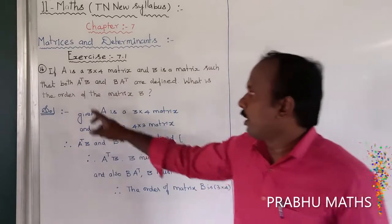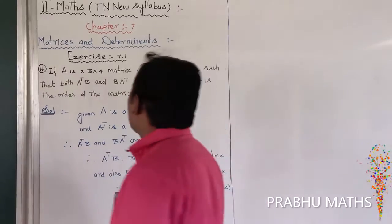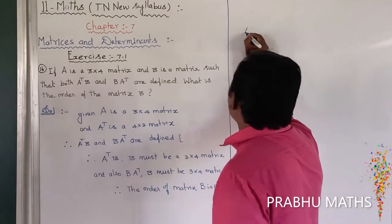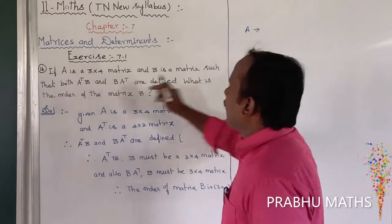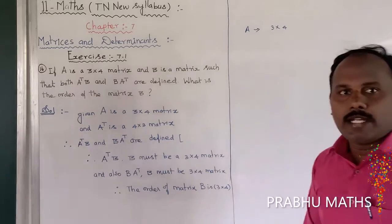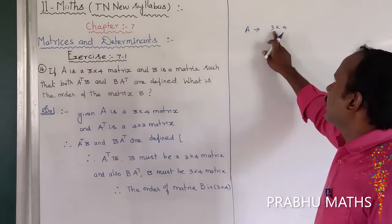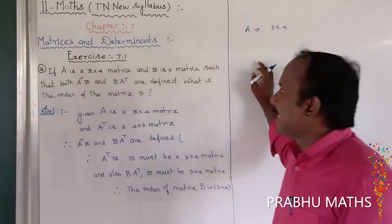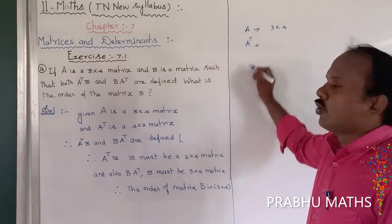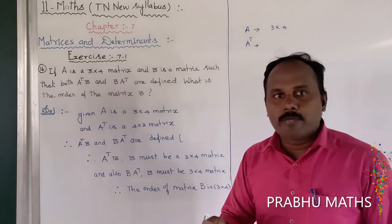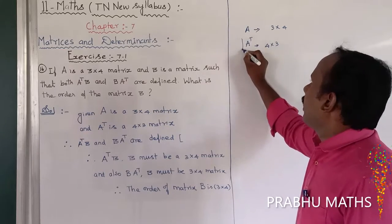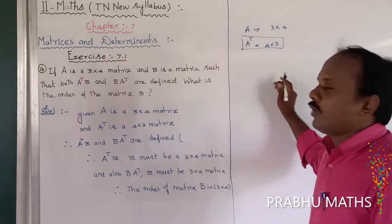To find the order of B, let us take the order of A as 3 by 4 matrix, as given. A transpose means rows and columns are interchanged — rows become columns and columns become rows. So A transpose is a 4 by 3 matrix.